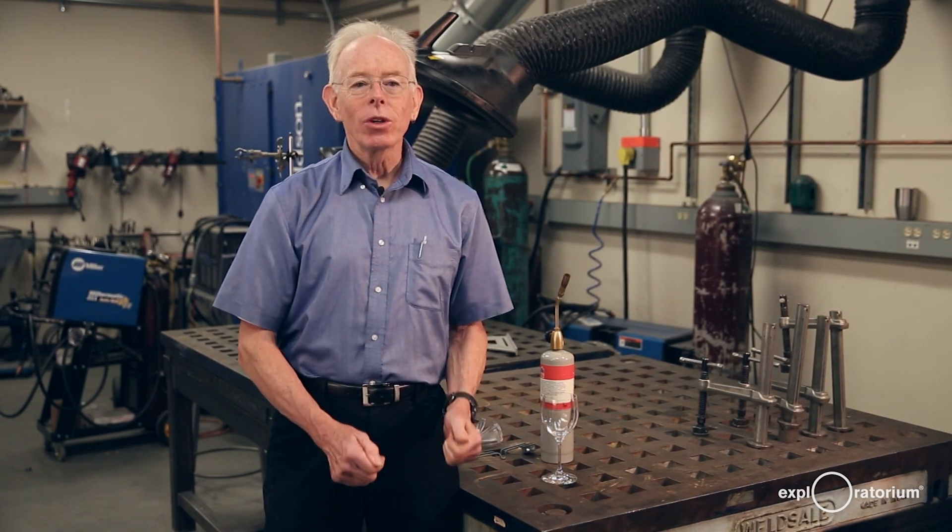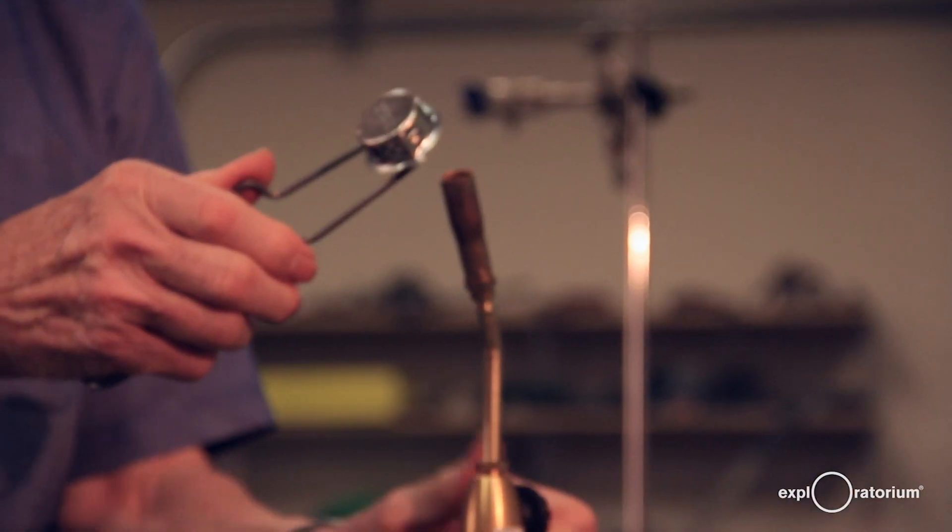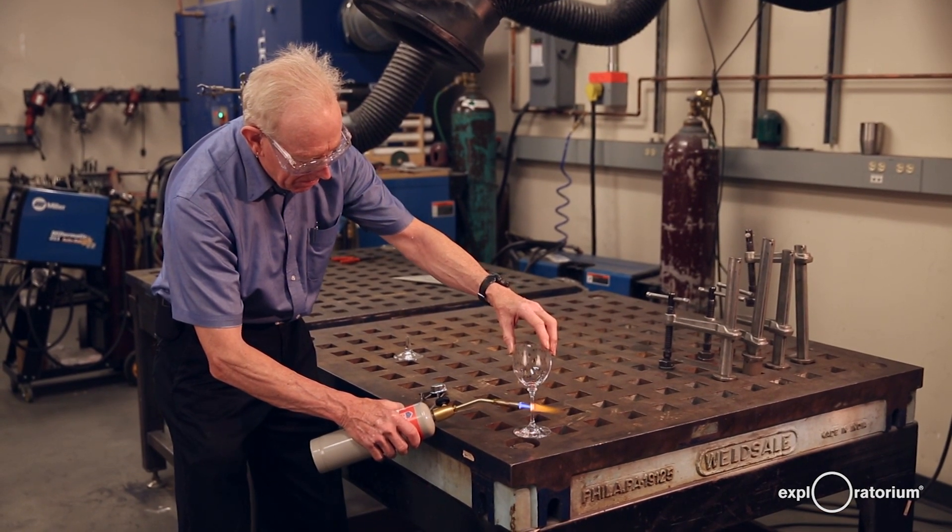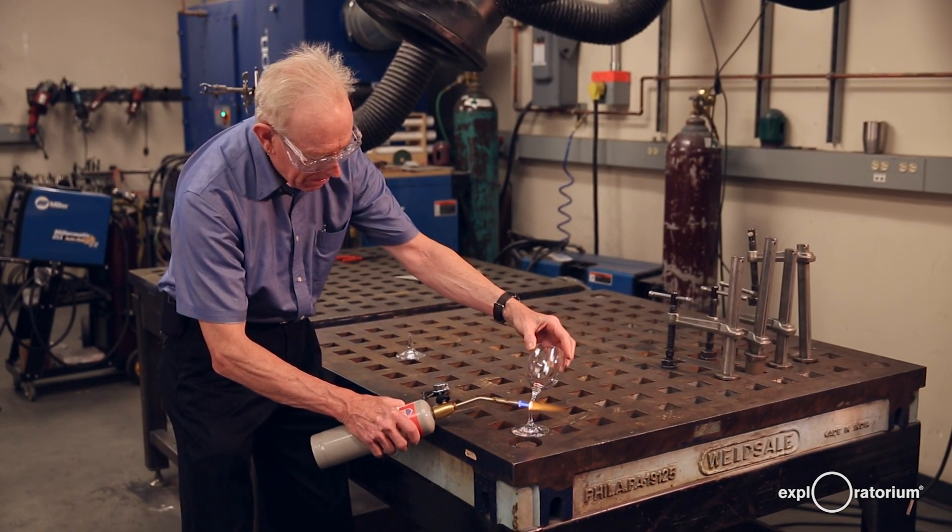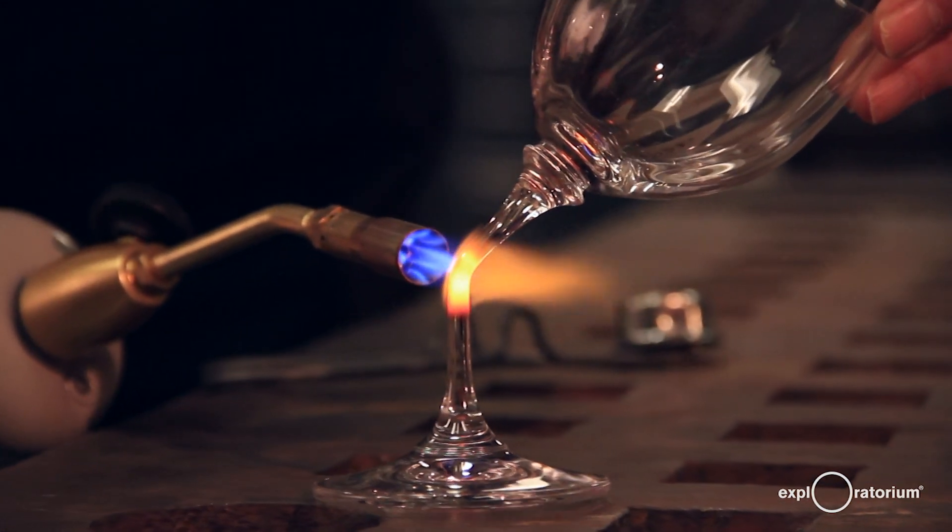Well, we can't bend light measurably on Earth using gravity, but I can show you how to use the bottom of a wine glass to bend light using refraction, in very much the same pattern that gravity bends light around the Sun or around a galaxy.